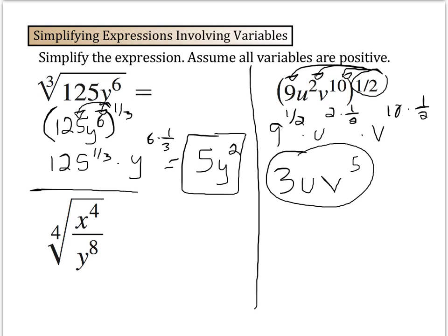Okay? We'll draw one more line here. For this one, I like to rewrite it once again. I'm going to have x to the 4th over y to the 8th raised to the 1 4th. Then we distribute that 1 4th to each term inside.